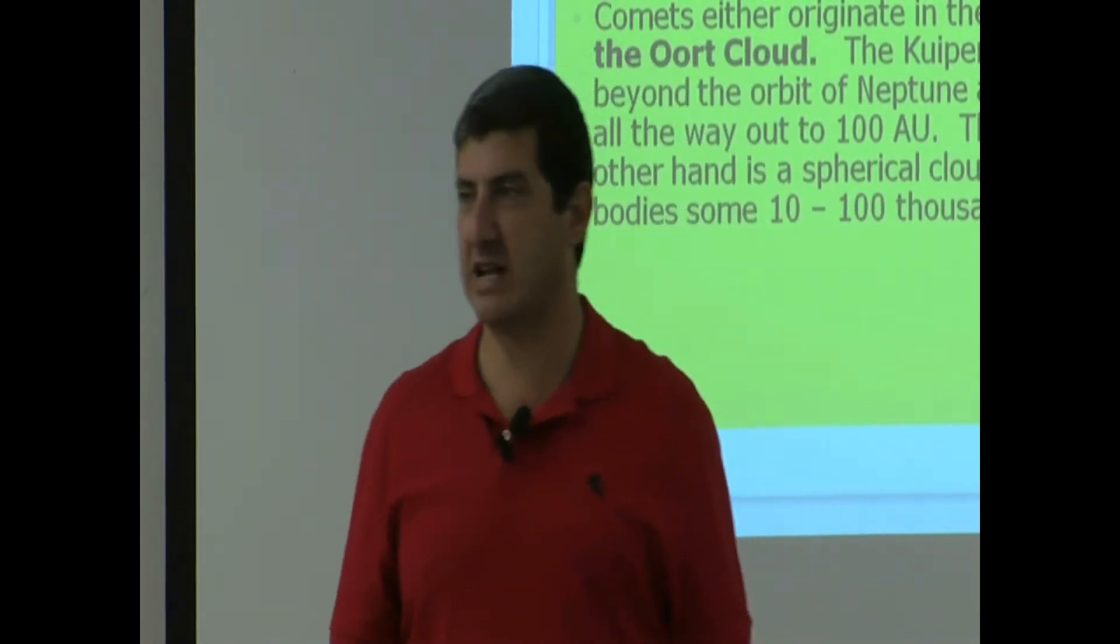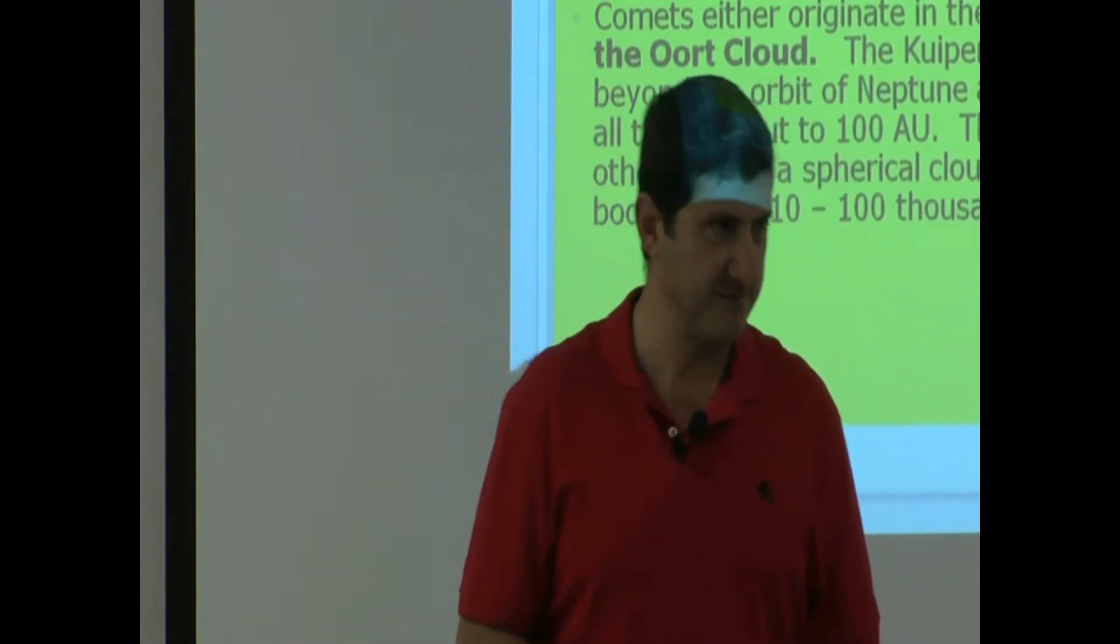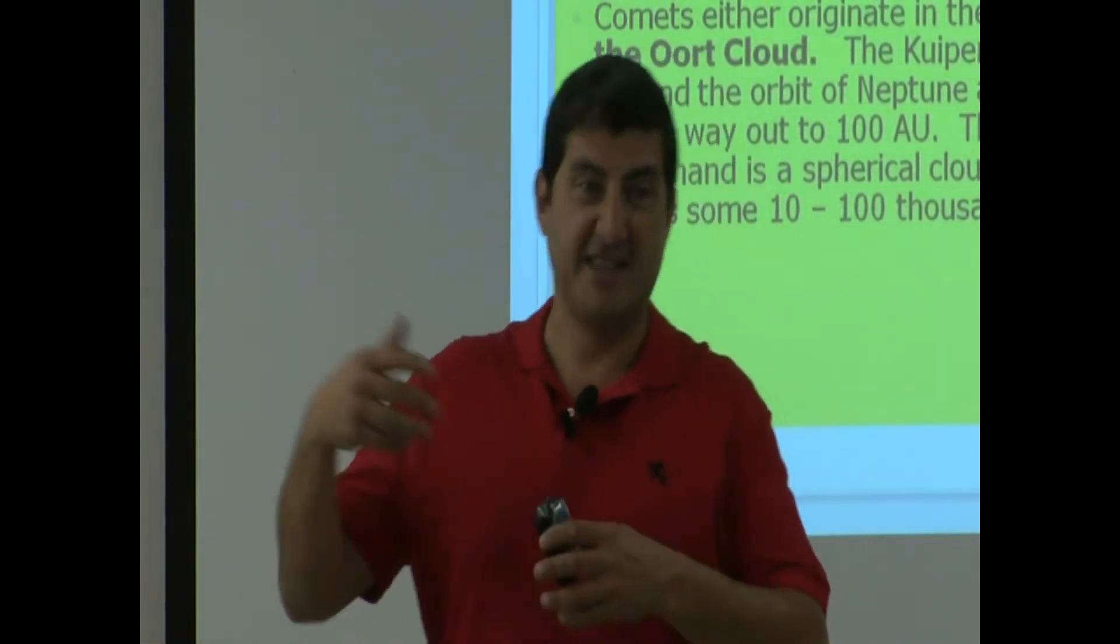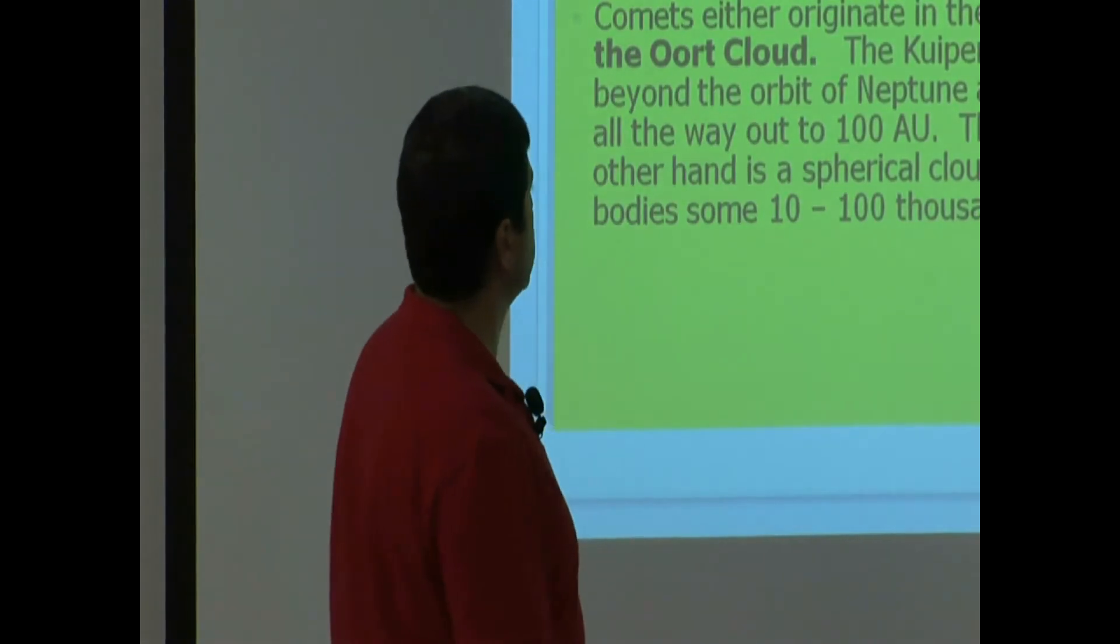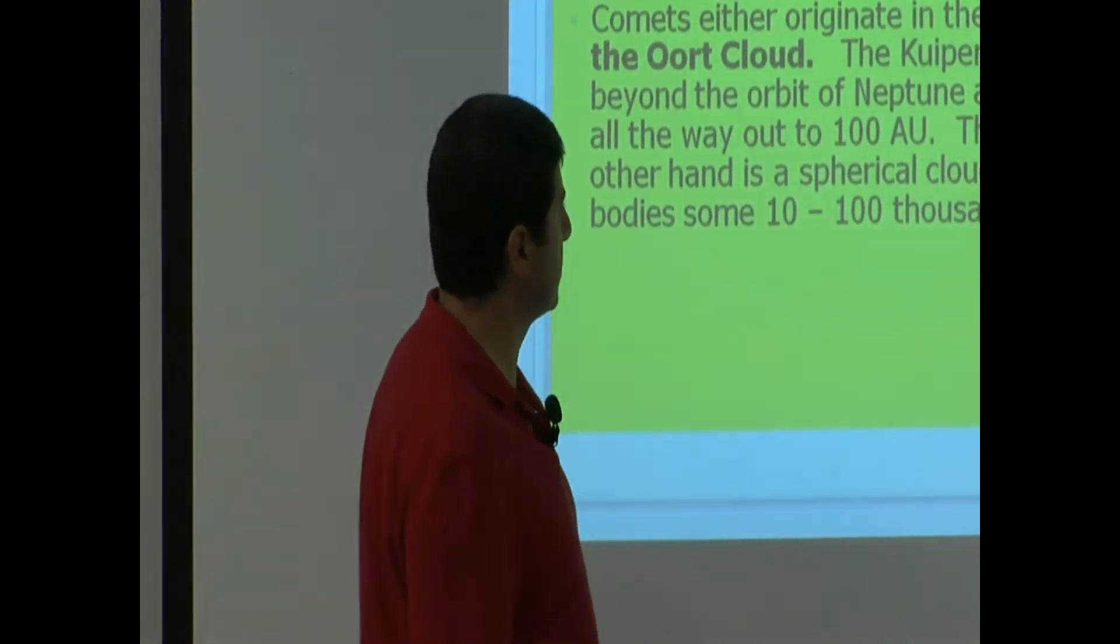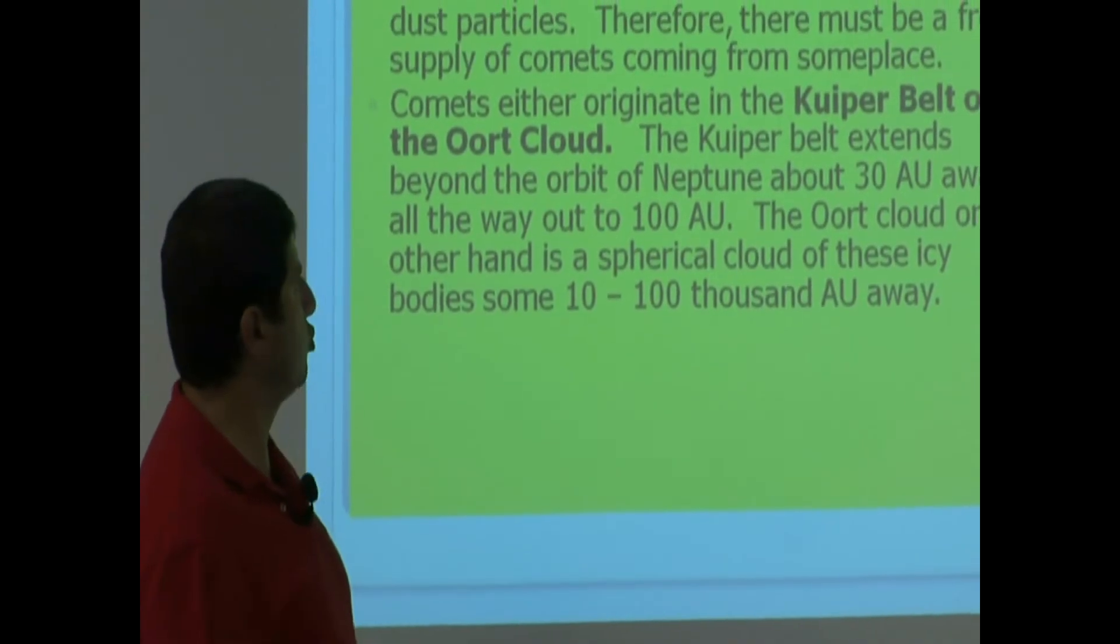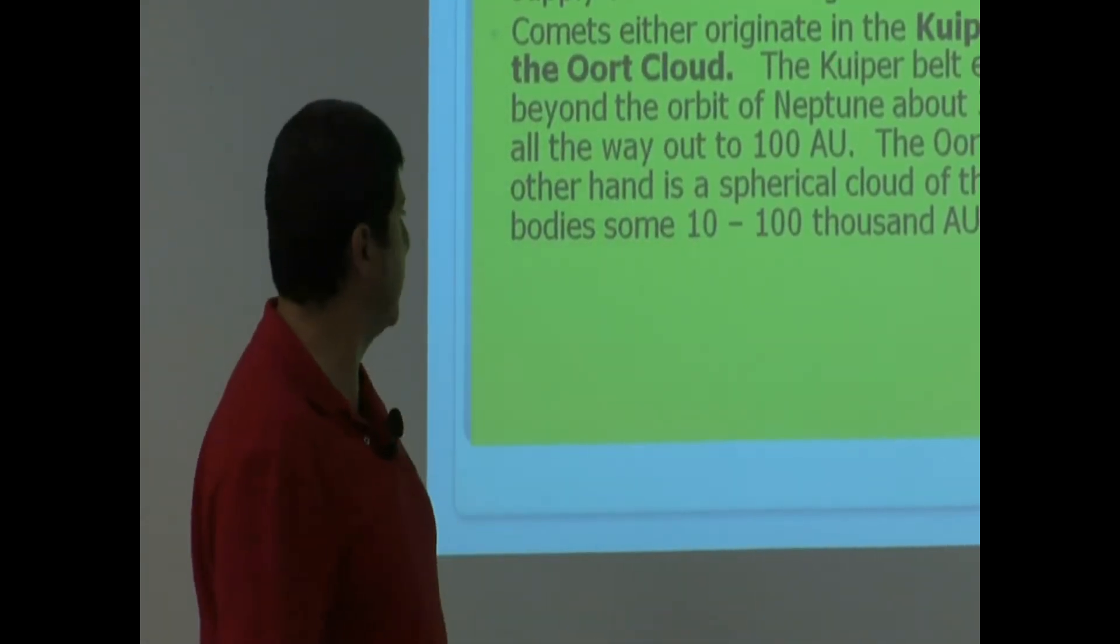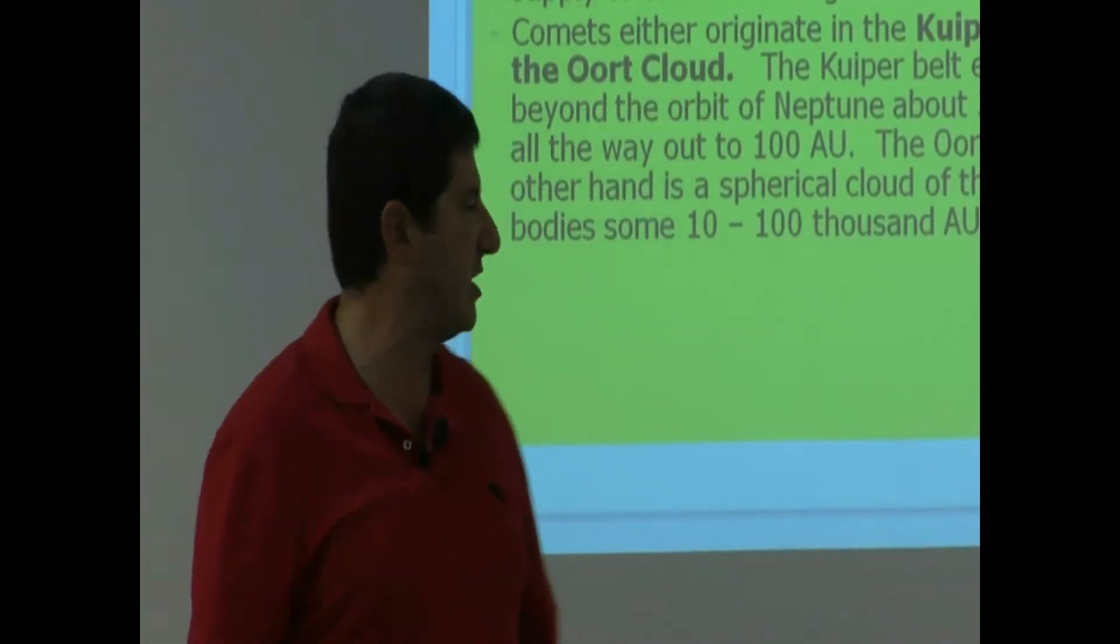The most famous of the Kuiper Belt objects is Pluto, our ninth planet that we used to think, is now unofficially a Kuiper Belt object. So the Kuiper Belt extends beyond the orbit of Neptune, and Pluto is one of those members, from 30 AUs away all the way out to 100 AU. The Oort Cloud, on the other hand, is a spherical cloud of these icy bodies some 10,000 to 100,000 AUs away, many, many thousands of AUs away.